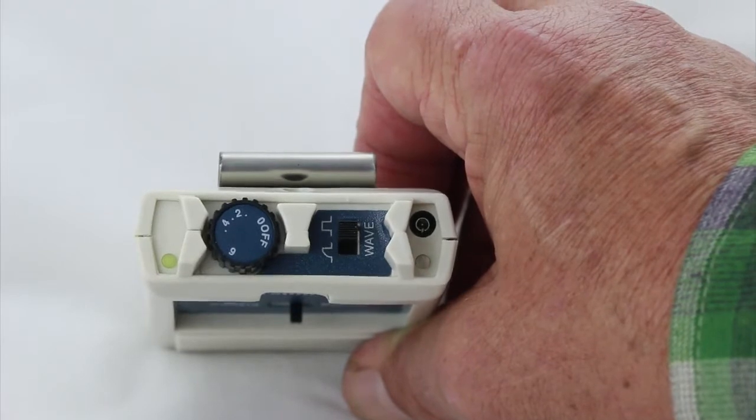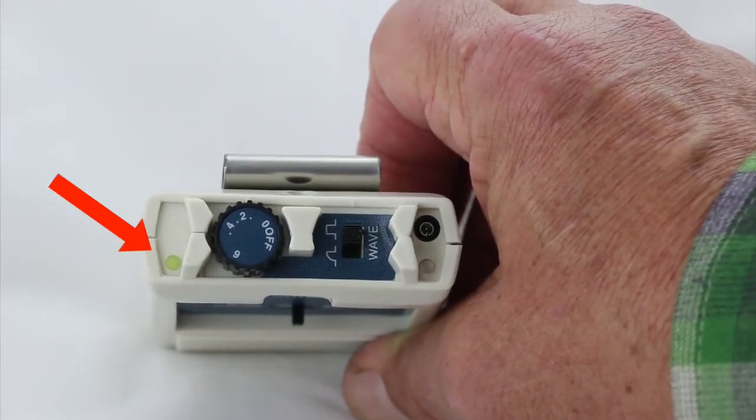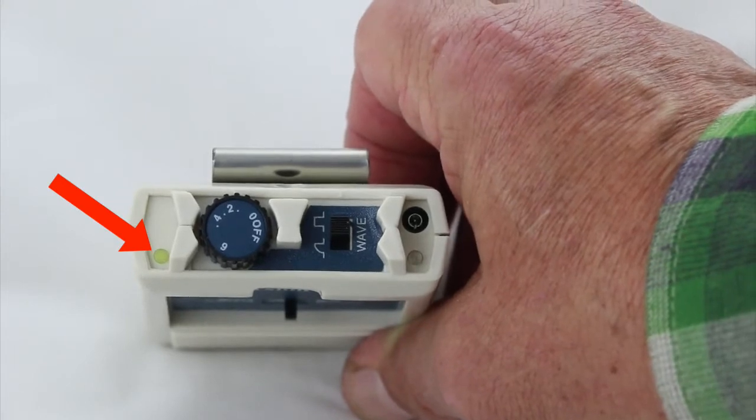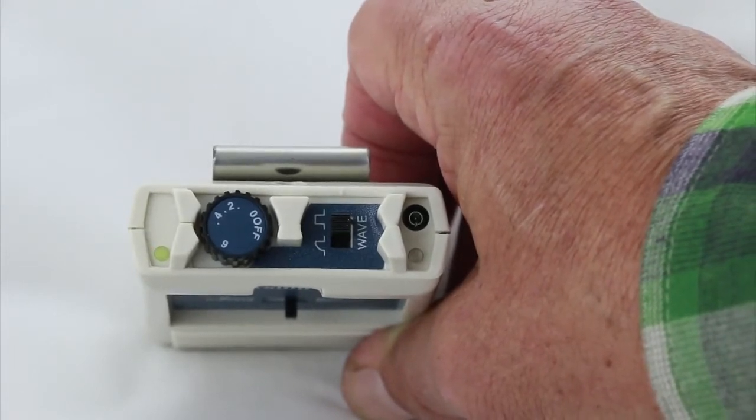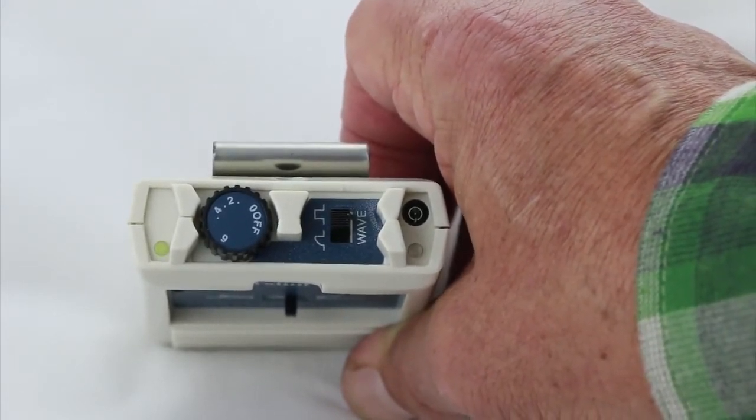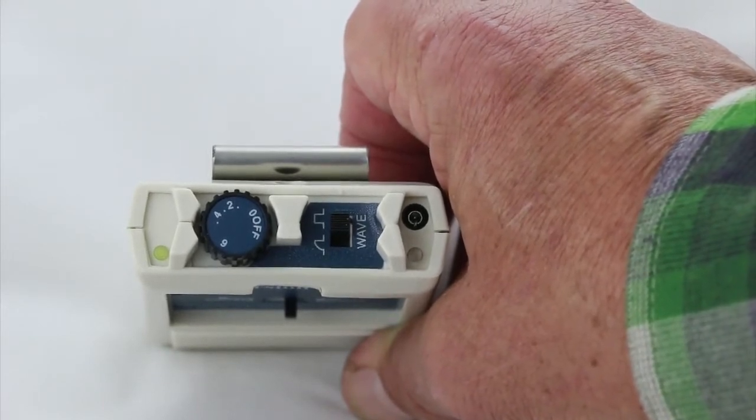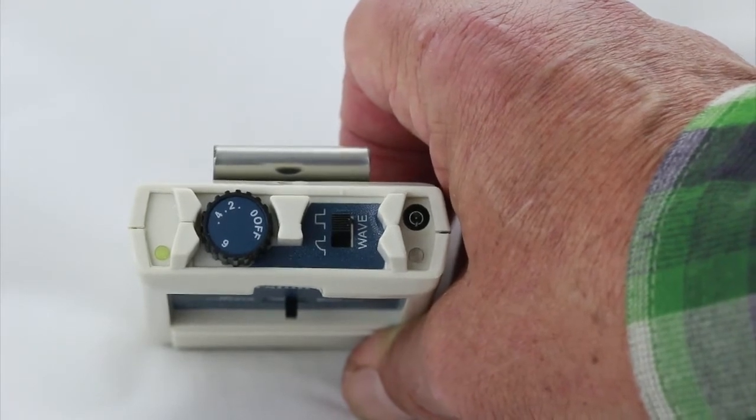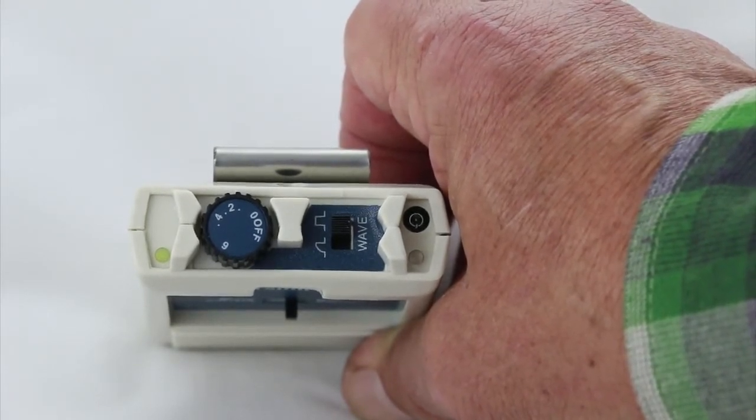You can see that there's a little light over on the left side of the unit. That green light tells you the condition of the battery. It simply says that the unit is on and the battery is good. That light will go from green to yellow and then to red. If it's red, it means you're close to needing a new battery.